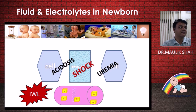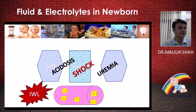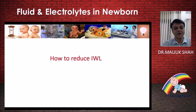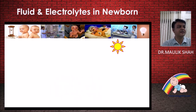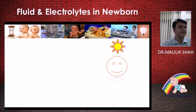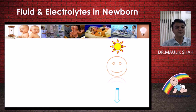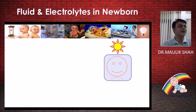To prevent these consequences, we need to control insensible water loss. We often treat babies under radiant warmers because it is easy to monitor, but this leads to a lot of insensible water loss. We need to shield and protect the baby from this loss.